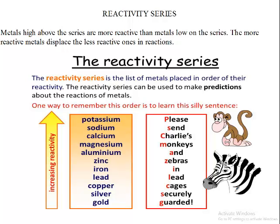The reactivity series is just an arrangement of metals based on their reactivity. The higher the metal on the series, the higher its reactivity. Metals high above the series are more reactive than metals low on the series. The more reactive metals displace the less reactive ones in a reaction.